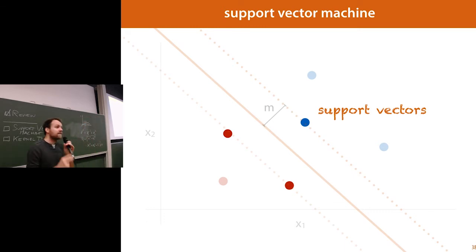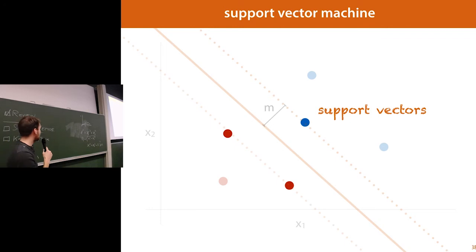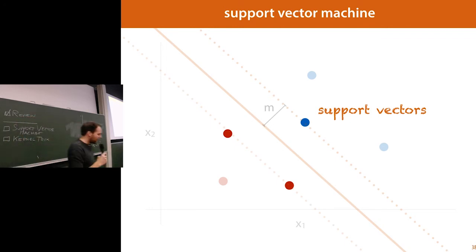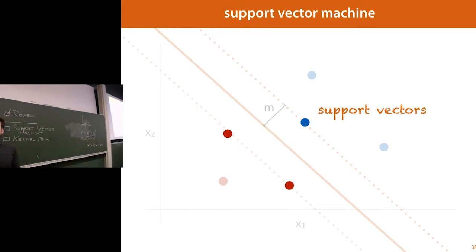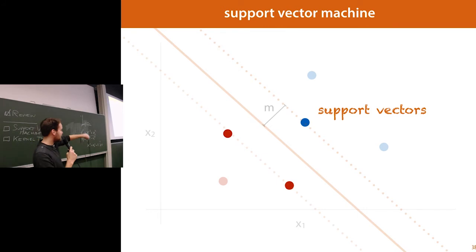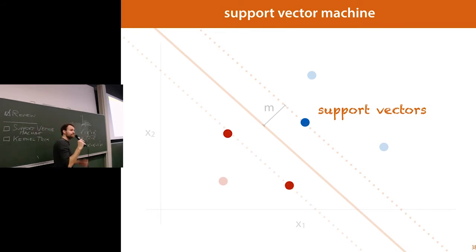The question is: how do we find this line? We do this with an algorithm called the support vector machine, which is what we're going to talk about after the break. So take a minute to digest that, and I'll see you in fifteen minutes.